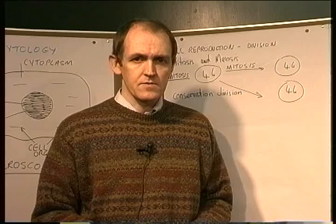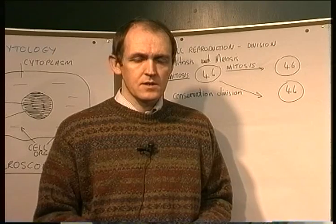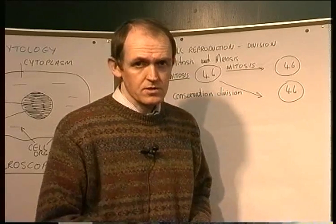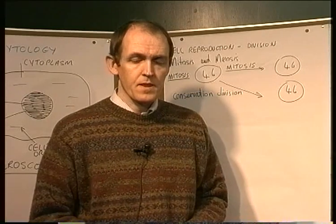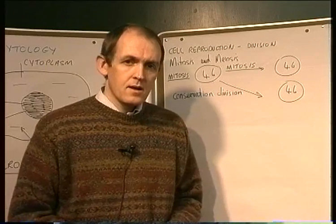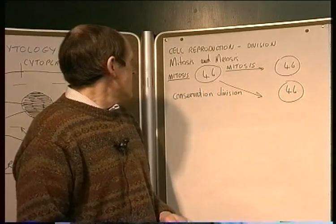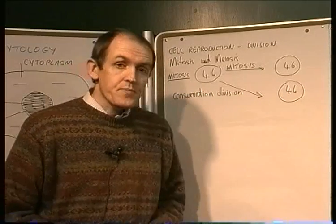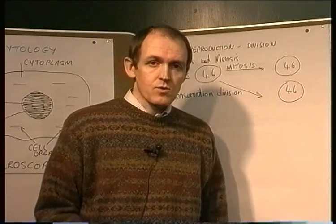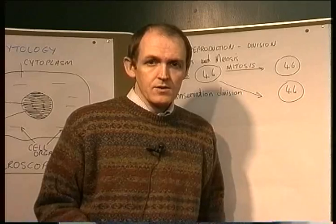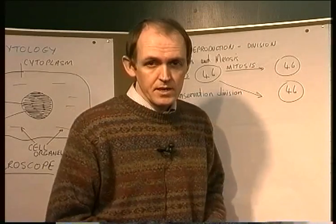This is conservative cell division — the number of chromosomes being conserved. Now, the other form of cell division we'll go on to look at is meiosis.